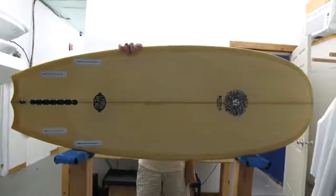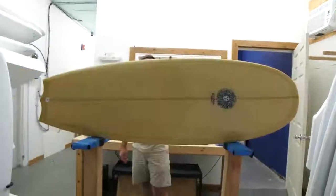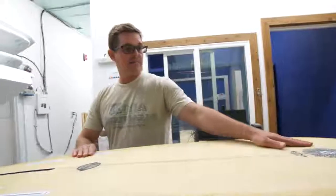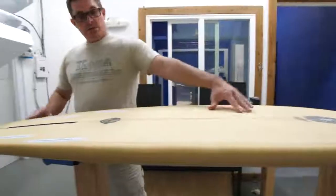Starting with dimensions. This board is 5'6", 21 7/8", 2 and 5/8". Big single concave through a double.